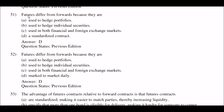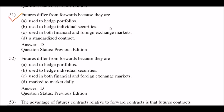Next question: futures differ from forwards because they are — option A: used to hedge portfolios; option B: used to hedge individual securities; option C: used in both financial and foreign exchange markets; option D: a standardized contract. The right answer is option D: a standardized contract.